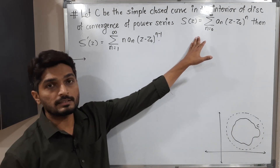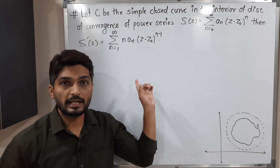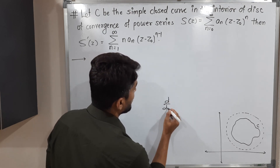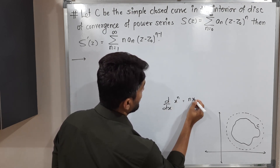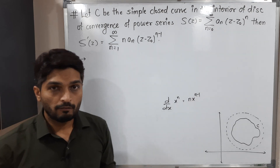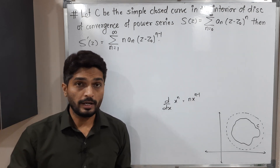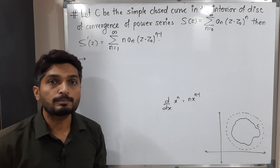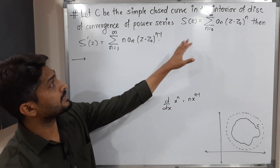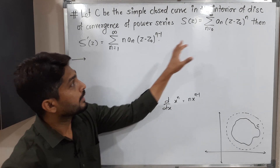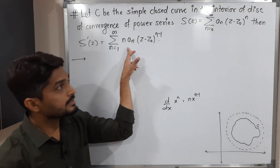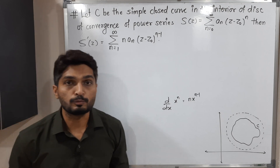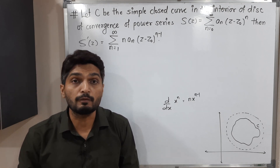We have to prove that the derivative of the power series can be calculated term by term. We are familiar with the formula: the derivative of x raised to n is n times x raised to n minus one. The same formula applies here — the power n is written out front and the power is reduced by one.